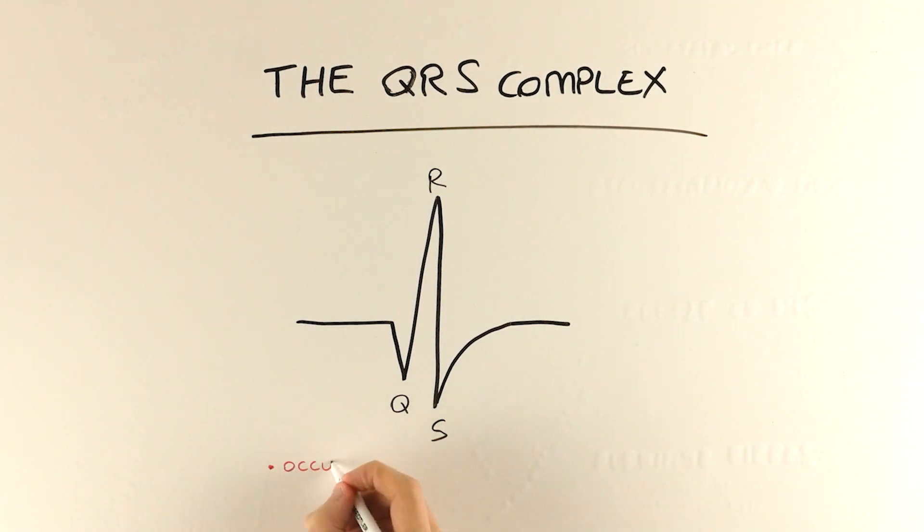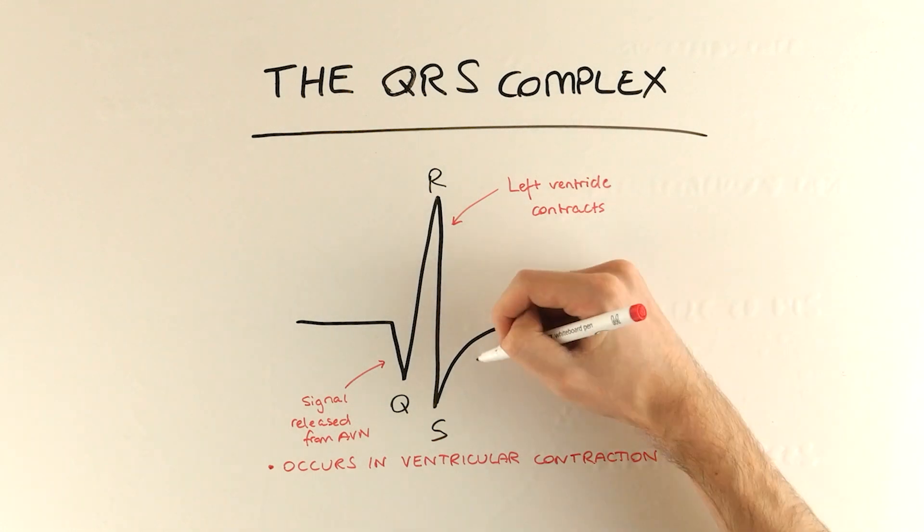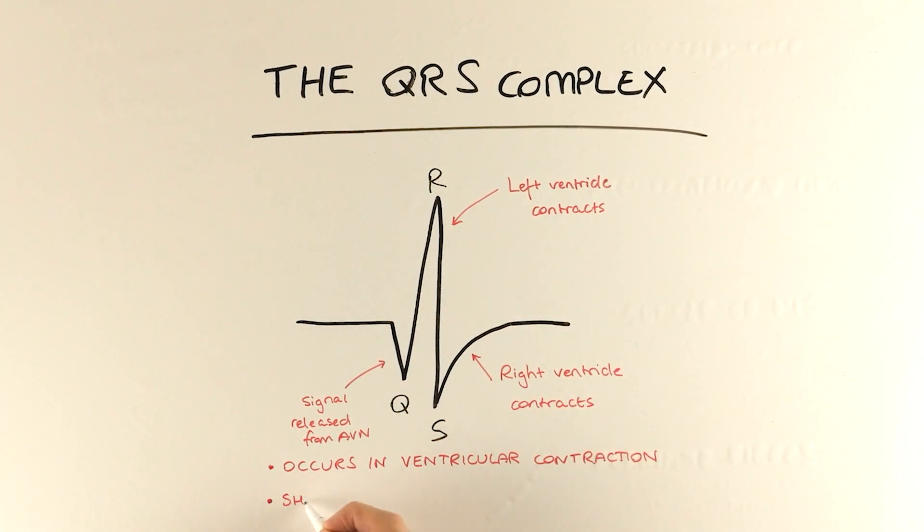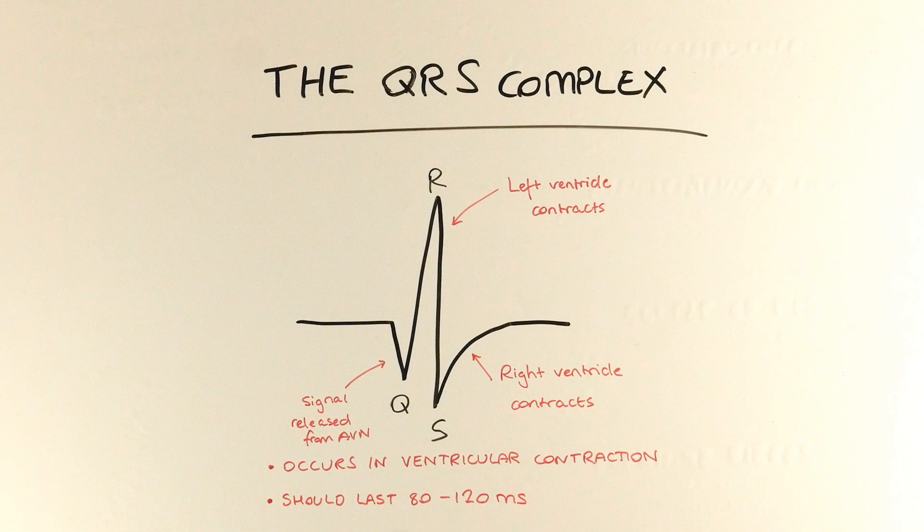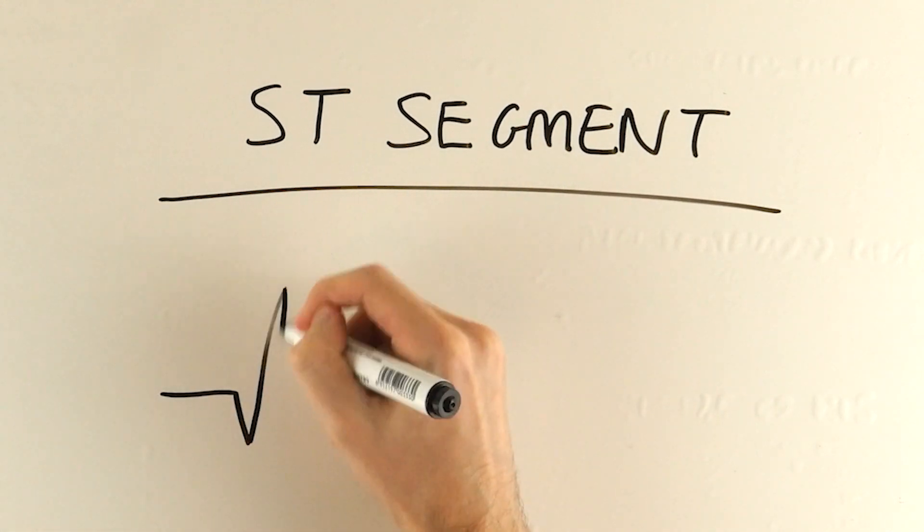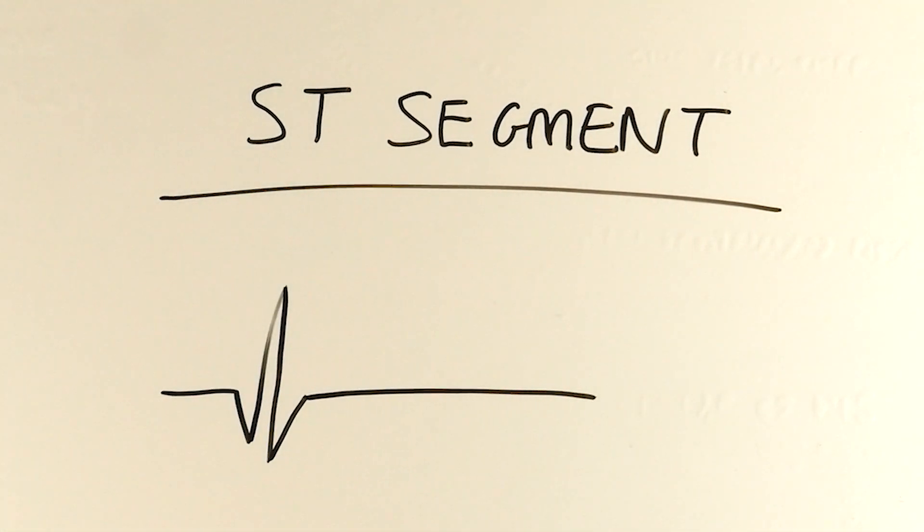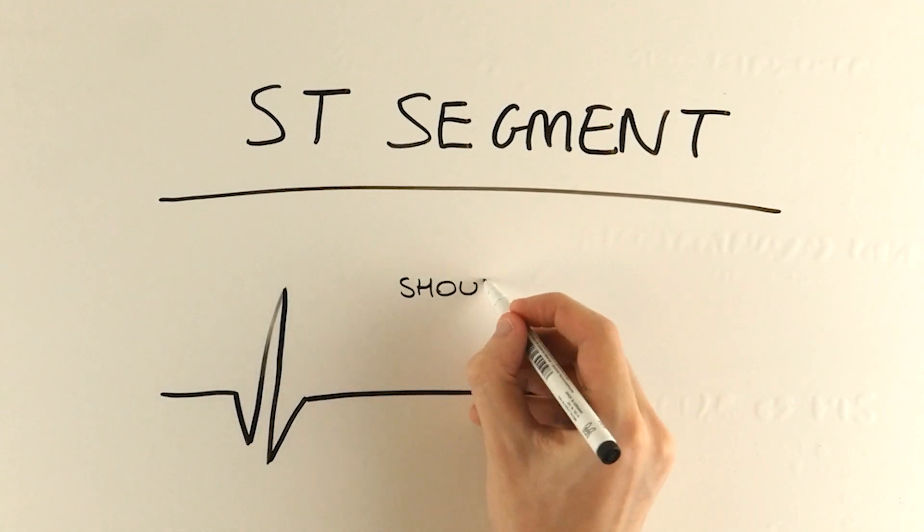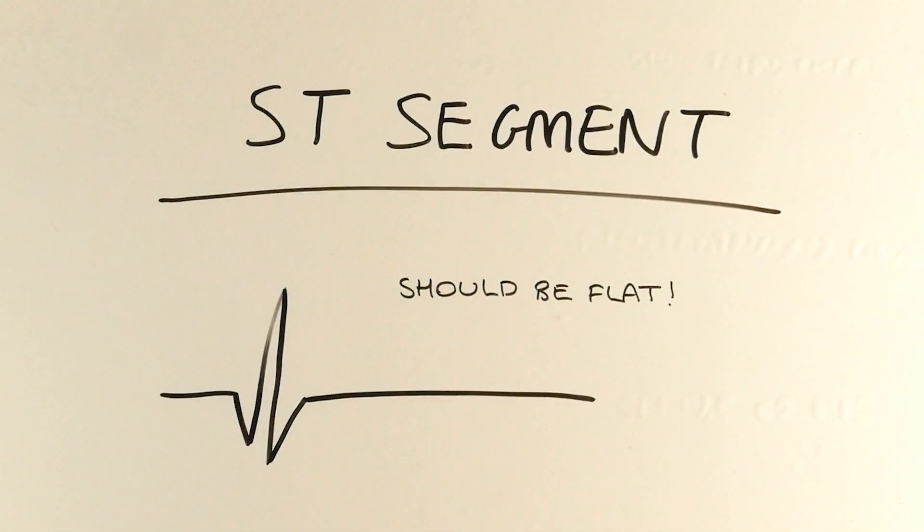We come down as the AV node releases the signal down the interventricular septum, up again in the tall R wave as the left ventricle contracts, and then down in the S wave as the right ventricle contracts. The QRS complex should last 80 to 120 milliseconds. We then move on to the ST segment, the period in which the blood is actually pumped from the ventricles to the lungs and the rest of the body. This should always be flat in a normal person, and we'll come back to that in a moment.